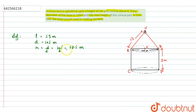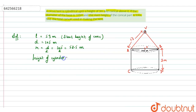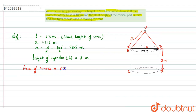We have the slant height of the cone and the radius. The height of the cylinder h = 3 metres. Now, the area of canvas of the tent equals the curved surface area of the cylinder plus the curved surface area of the cone, that is: 2πrh + πrl.